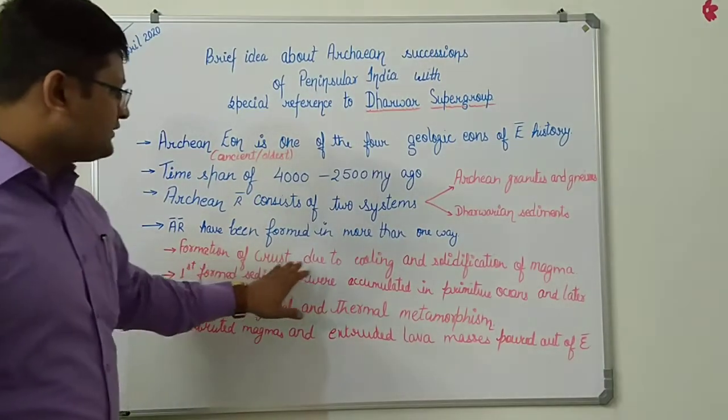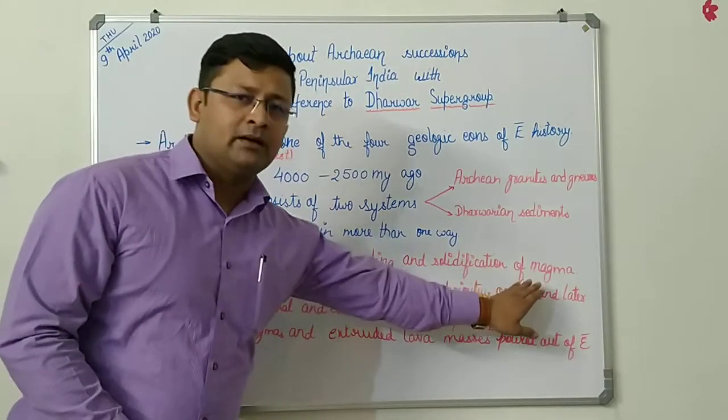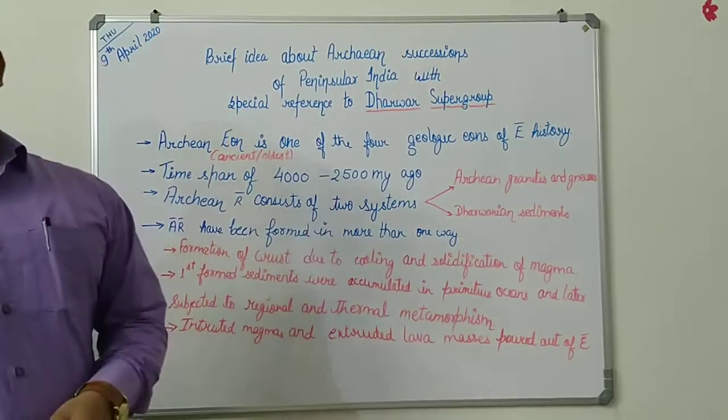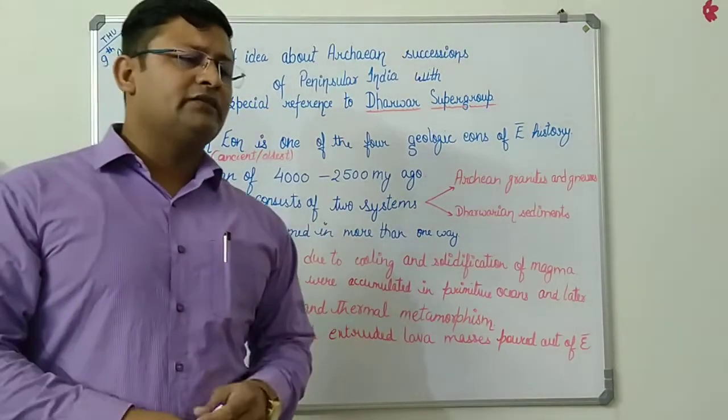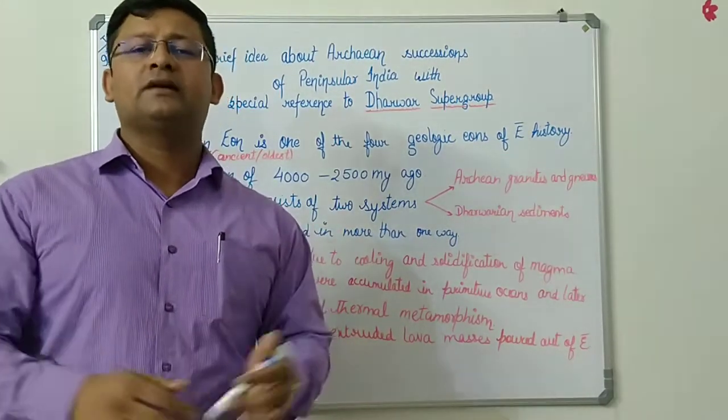The first one is formation of the crust due to cooling and solidification of the magma. When the primordial earth was cooling, there was a cooling effect on the magma and as a result of which the crust was formed.